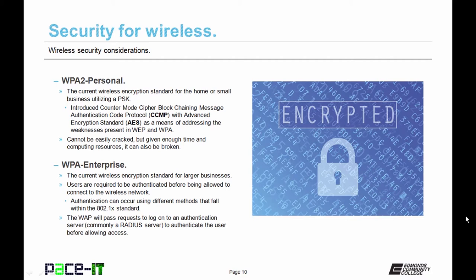Better than WPA is WPA-2 Personal, which is the current wireless encryption standard for the home or small business, and it utilizes a pre-shared key for encryption. WPA-2 Personal introduced CCMP with AES — counter-mode cipher block chaining message authentication code protocol with Advanced Encryption Standard — to address the weaknesses present in WEP and WPA. It cannot be easily cracked, and while it can be broken given enough time and computing resources, it can still be considered a secure encryption standard for the home or small office.